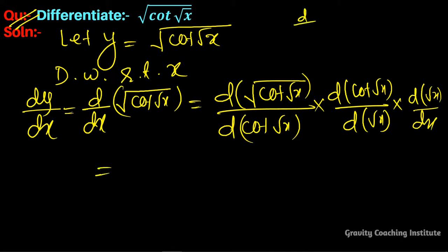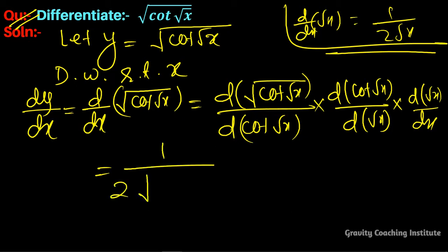The derivative of root x is 1 over 2 root x. We'll use this here, so we get 1 over 2 root cot root x. The derivative of cot root x is minus cosec squared root x.